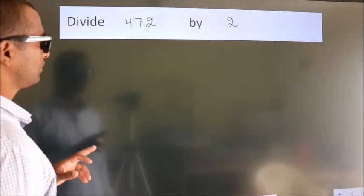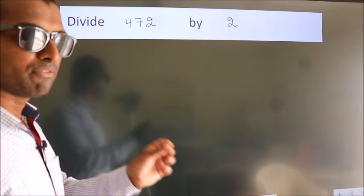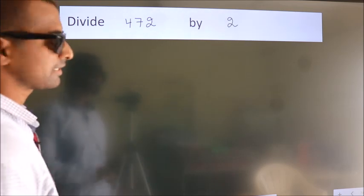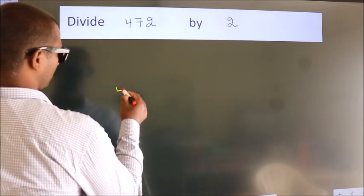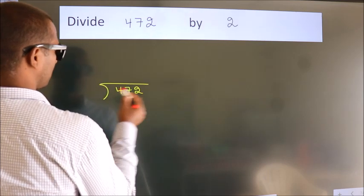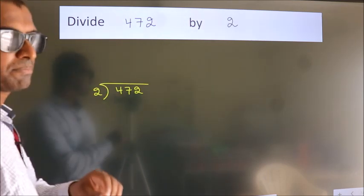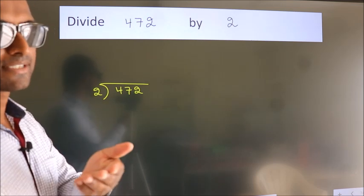Divide 472 by 2. To do this division, we should frame it in this way. 472 here, 2 here. This is your step 1. Next.